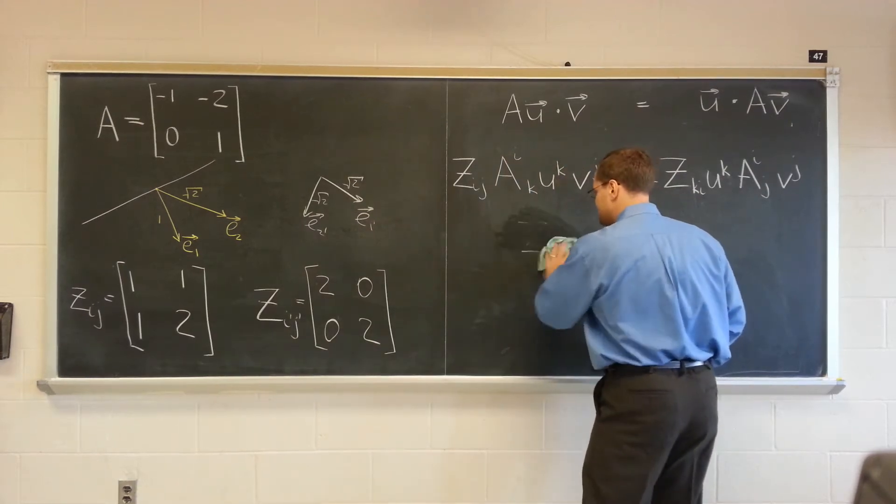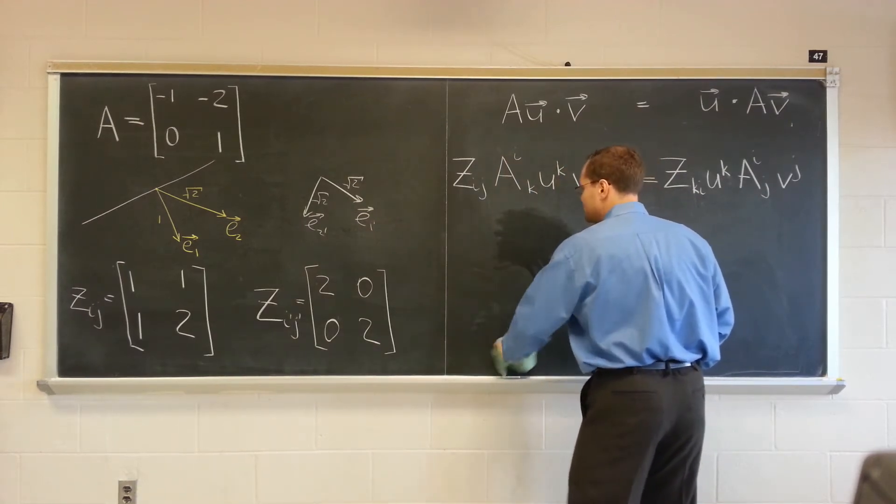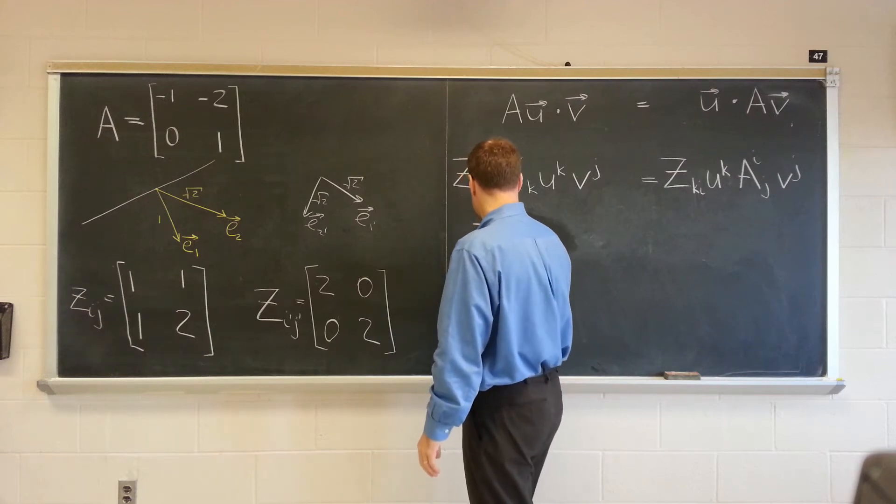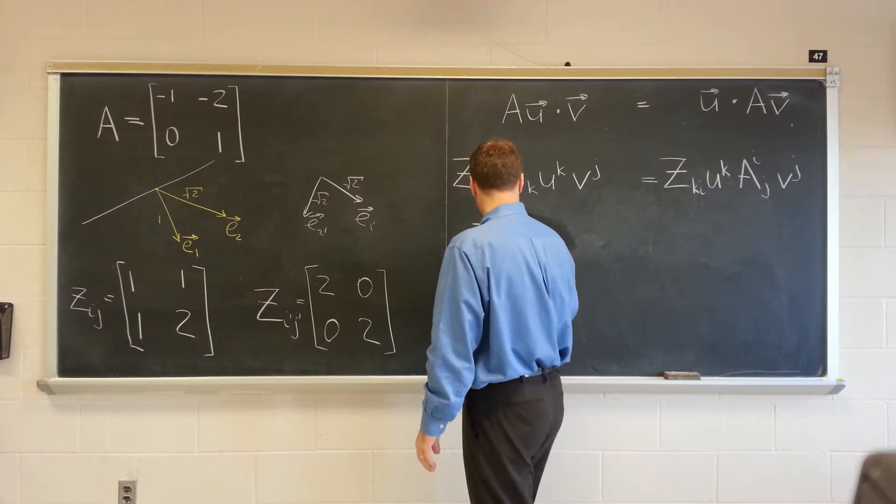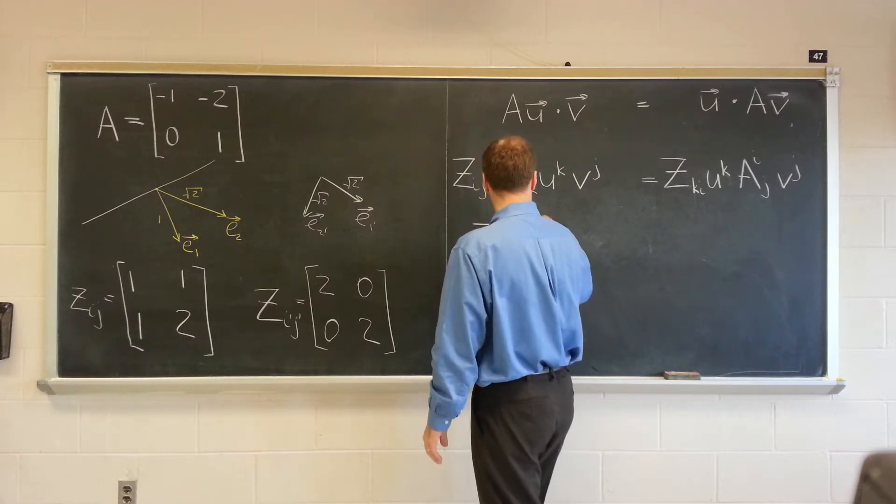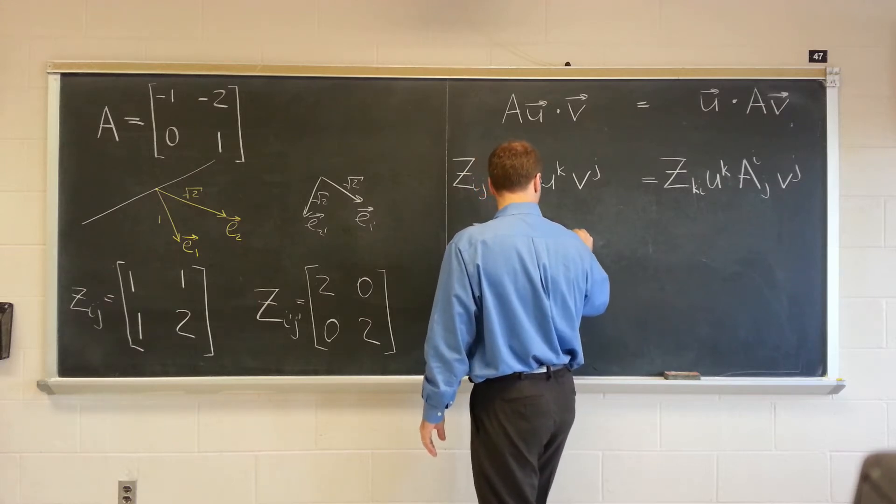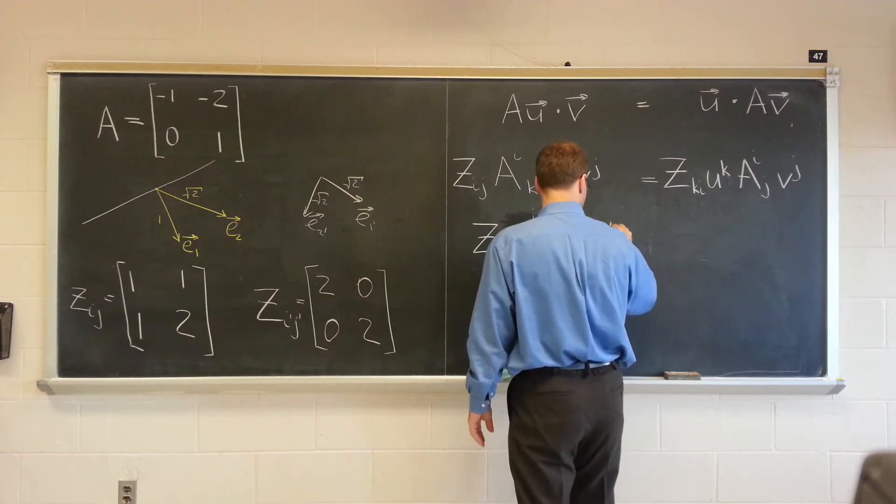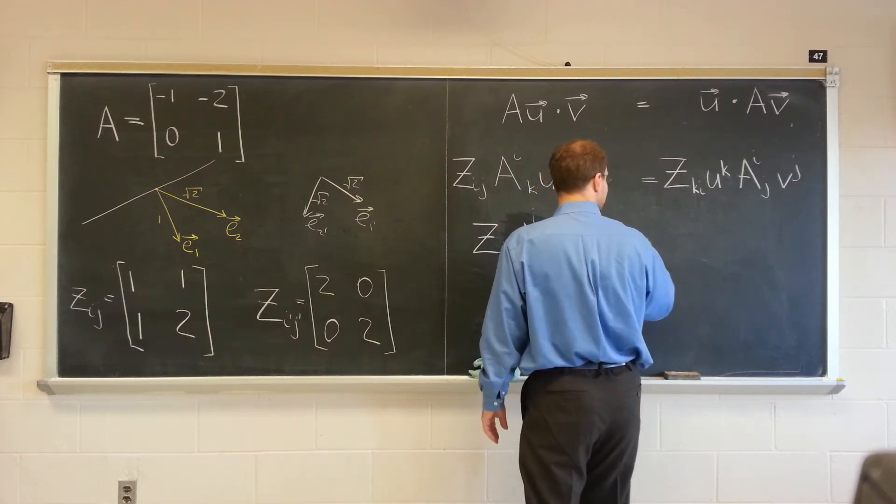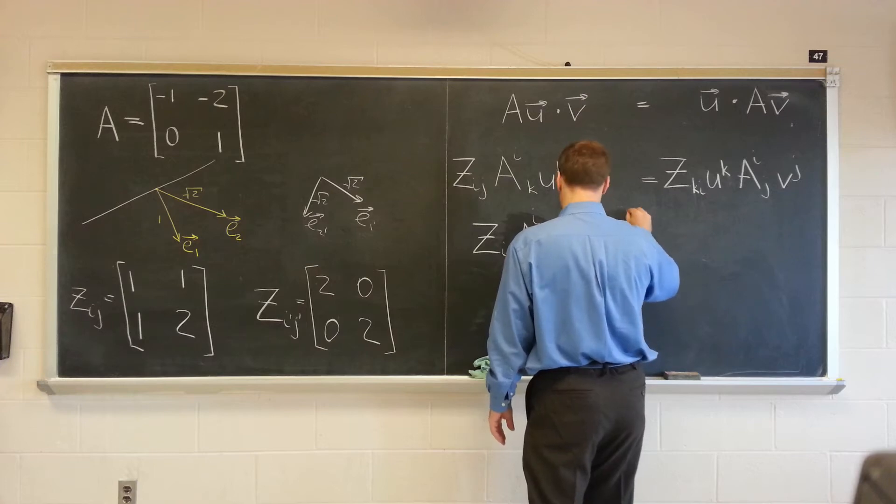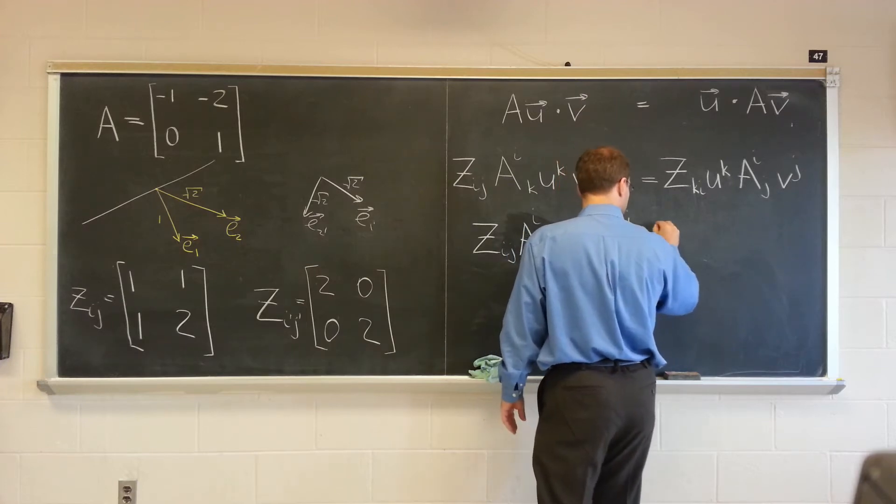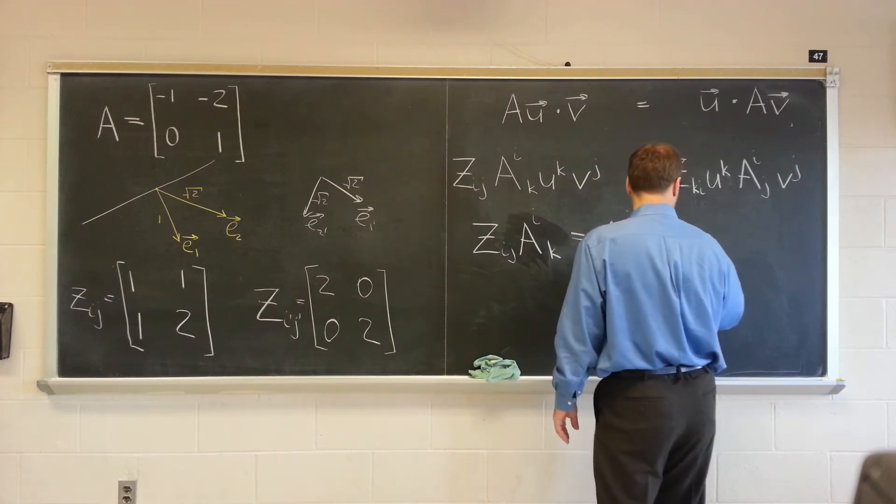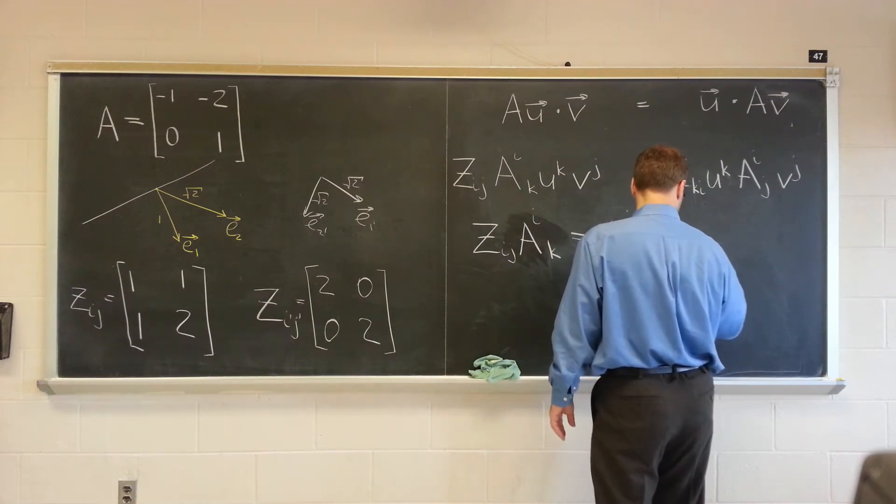Again, I'll start slightly to the left because we'll actually write it down in different forms. Z_ij A_ik must equal Z... Well, let me just write it in the same order. Z A_ij Z_ki. Alright.